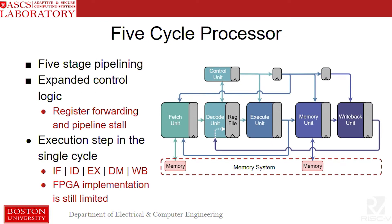Next up is the five-cycle processor. These processors will be presented as their complexity increases. This is our five-stage pipeline processor. We have two versions: one that uses forwarding and one that uses stalling. If it fits your needs, please feel free to use it. But its FPGA implementation is still limited.